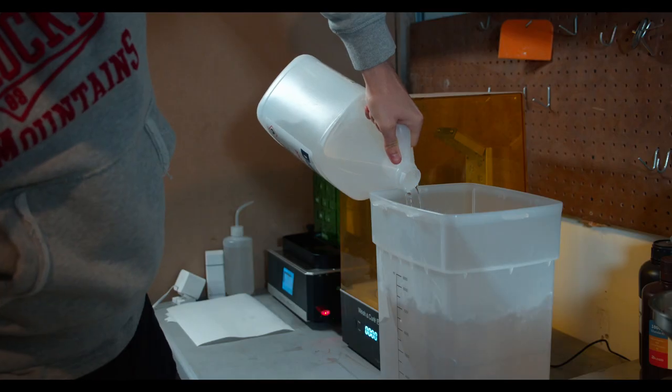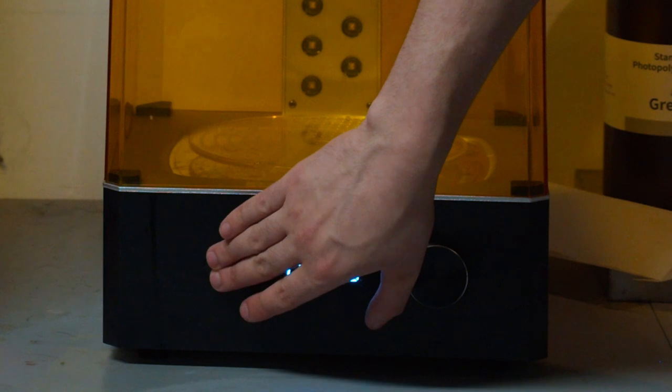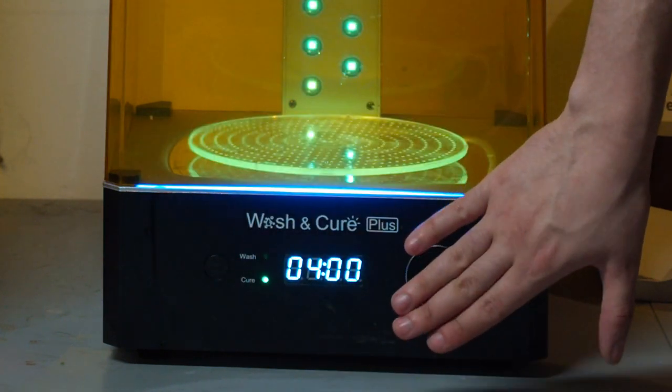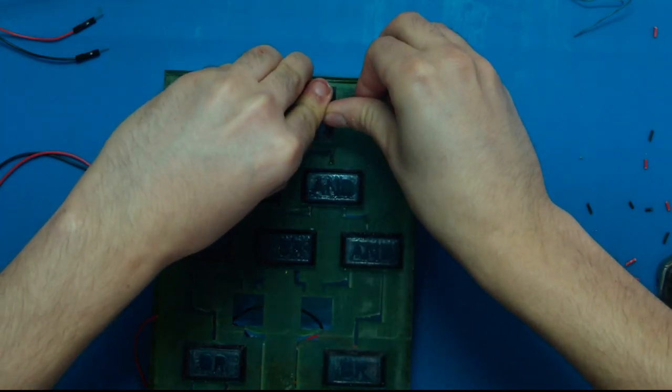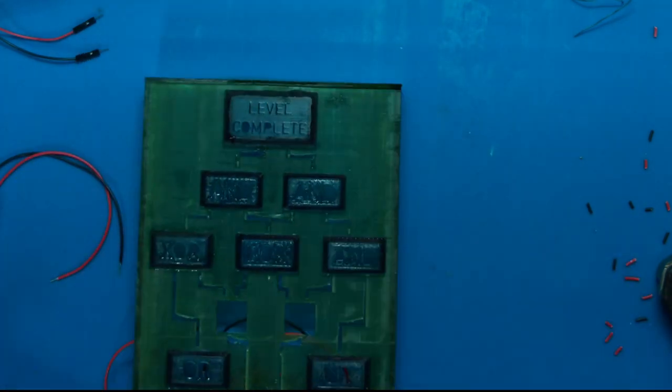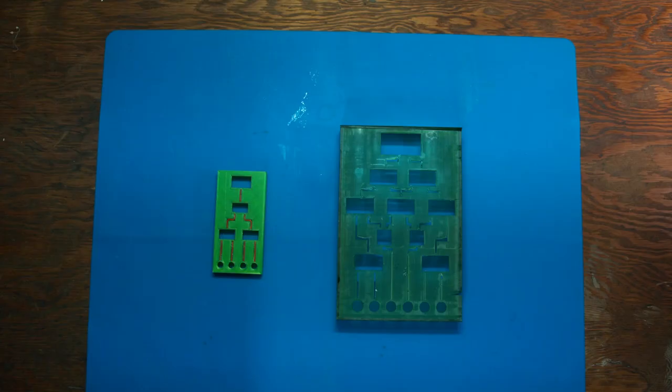After removing all the parts from the printer, you have to clean them with alcohol and then cure them in the special machine. So now we have all our parts and we can start putting it together. This is what it looks like without any of the electronics or LEDs inside of it. Quite a difference from our prototype.